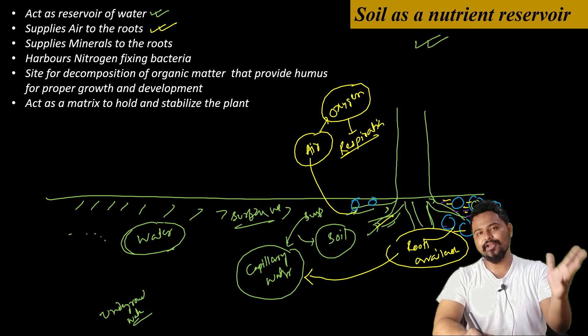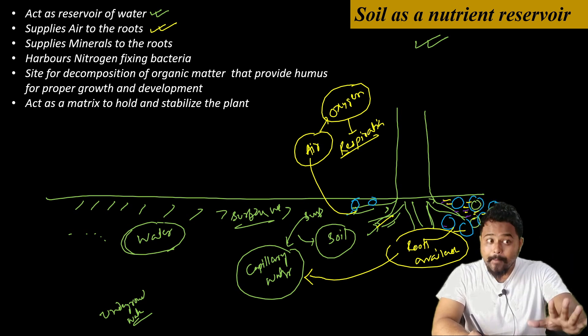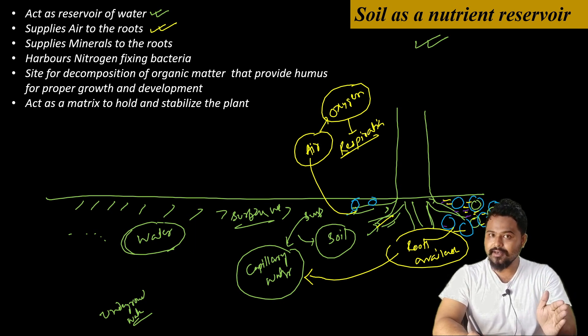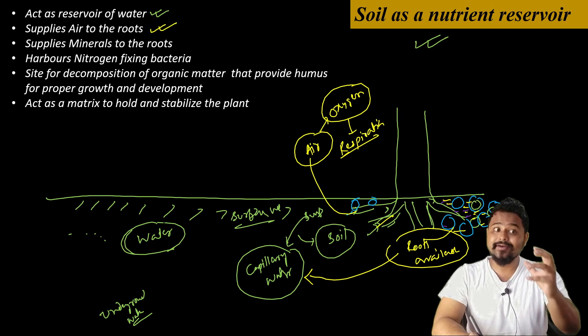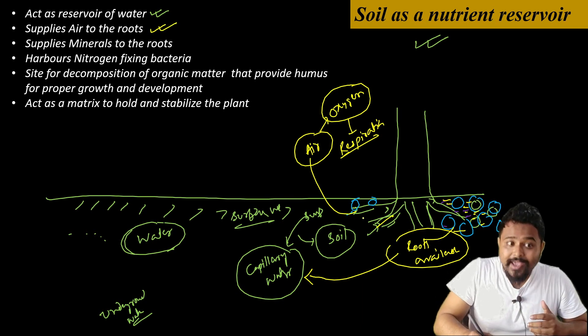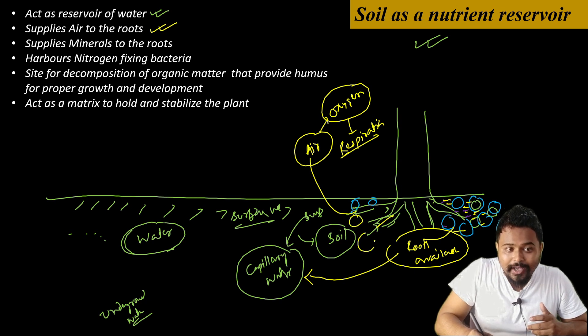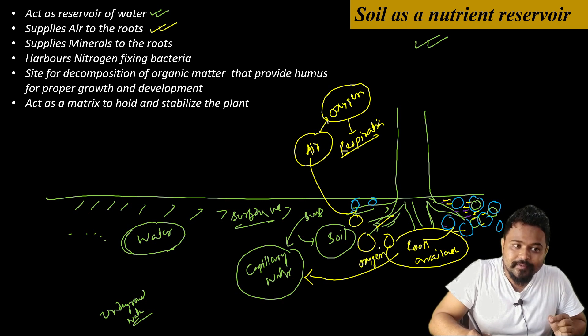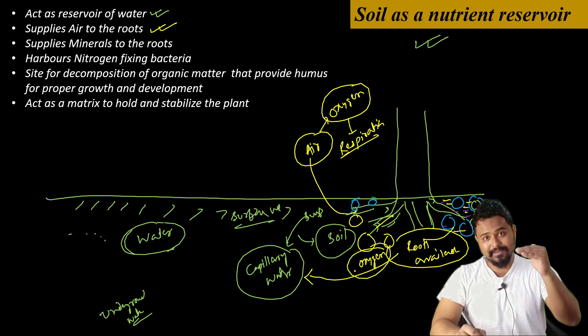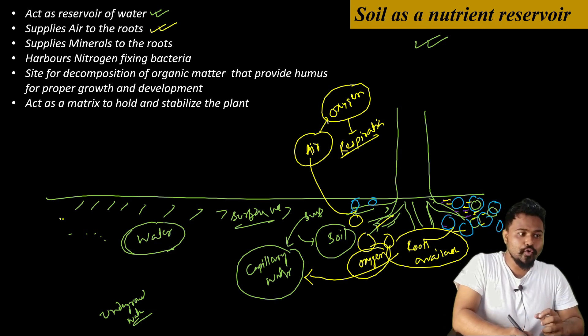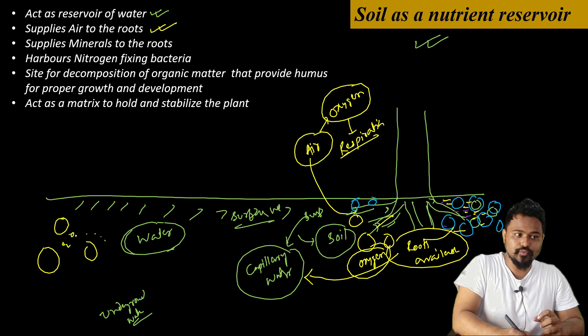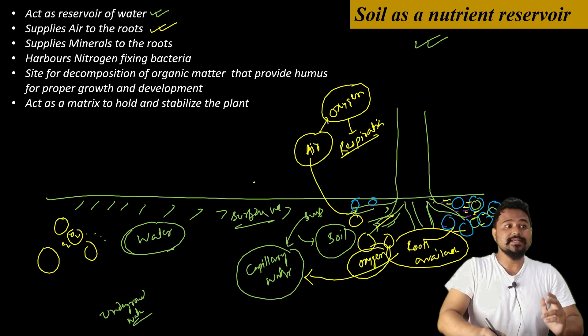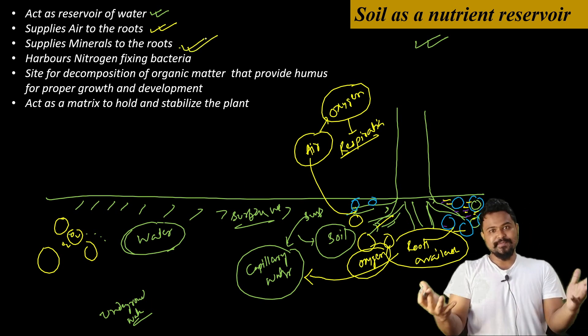All living cells respire. Of course, there are some exceptions like anaerobic bacteria that don't need oxygen. But plant living cells are eukaryotic cells, so they need oxygen for respiration. This oxygen comes from the soil. Between soil particles, oxygen is present which the roots can obtain.